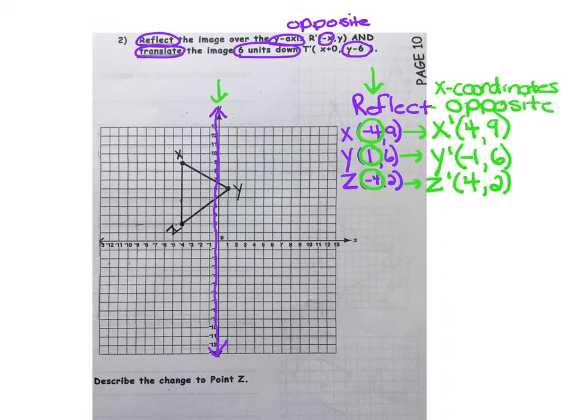Jotting down a few notes for myself off to the side helps when I go to answer the bottom statement where it says describe the changes to point z. By making notes along the way, it will help me add detail to my written response. So my first transformation is complete.